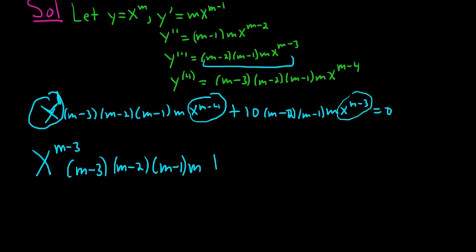And then here we have x to the m minus 3. I'm going to put it in the front. So plus x to the m minus 3. Then we have 10, m minus 2, m minus 1, and then m. And that's all equal to 0.